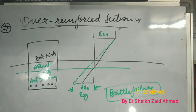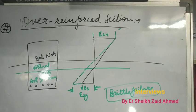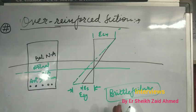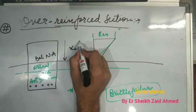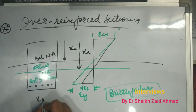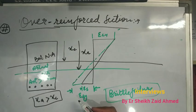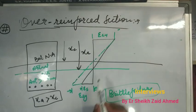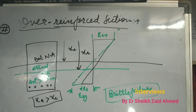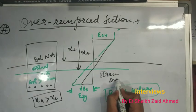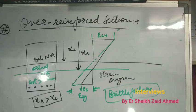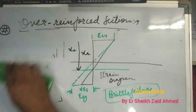This brittle failure gives no warning. Design codes therefore restrict the percentage of tension steel in a reinforced concrete beam to that of a balanced section, so we never design an over reinforced section. If we are getting an over reinforced section, then we will redesign it as a balanced section. In case of over reinforced section, the actual depth of neutral axis XA is greater than its critical depth XC. When the strain in concrete reaches its ultimate value, the strain in steel is less than its yield value, causing crushing of concrete and sudden failure.